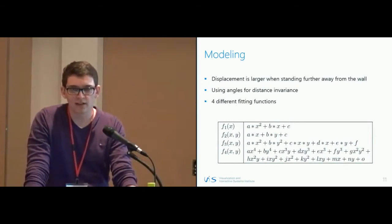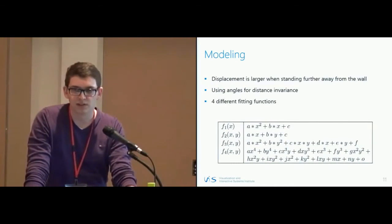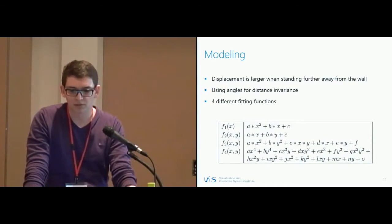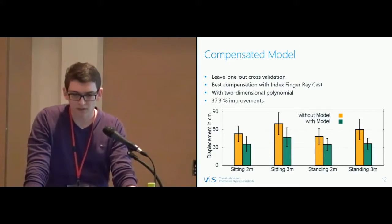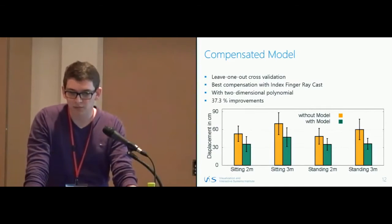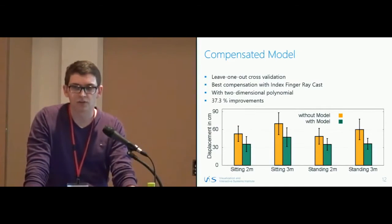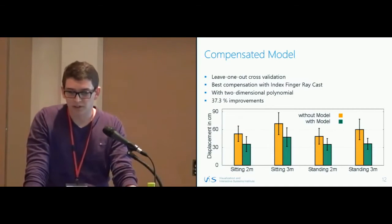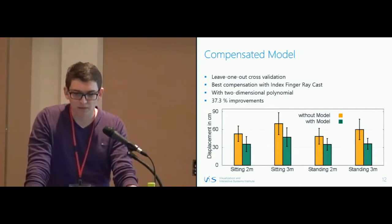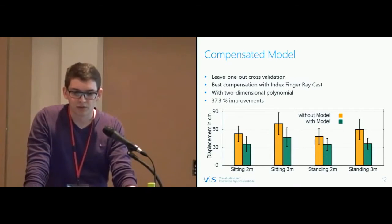We fitted the data onto four different functions: one was a one-dimensional model and three were two-dimensional models. To evaluate the models, we used leave-one-out cross-validation. Already with a linear model, we had improvements for all four functions. The best compensation was when using index finger raycasting with a two-dimensional polynomial.